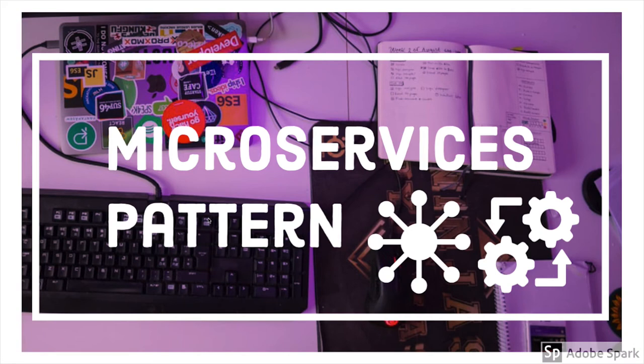This is the sixth video. In the previous five videos I talked about the requirement of microservices — why we need to move to a microservice if we have a complex system where modules are tightly coupled. We talked about different microservice patterns: CQRS, event sourcing, and integration patterns like API gateway pattern and aggregator pattern.